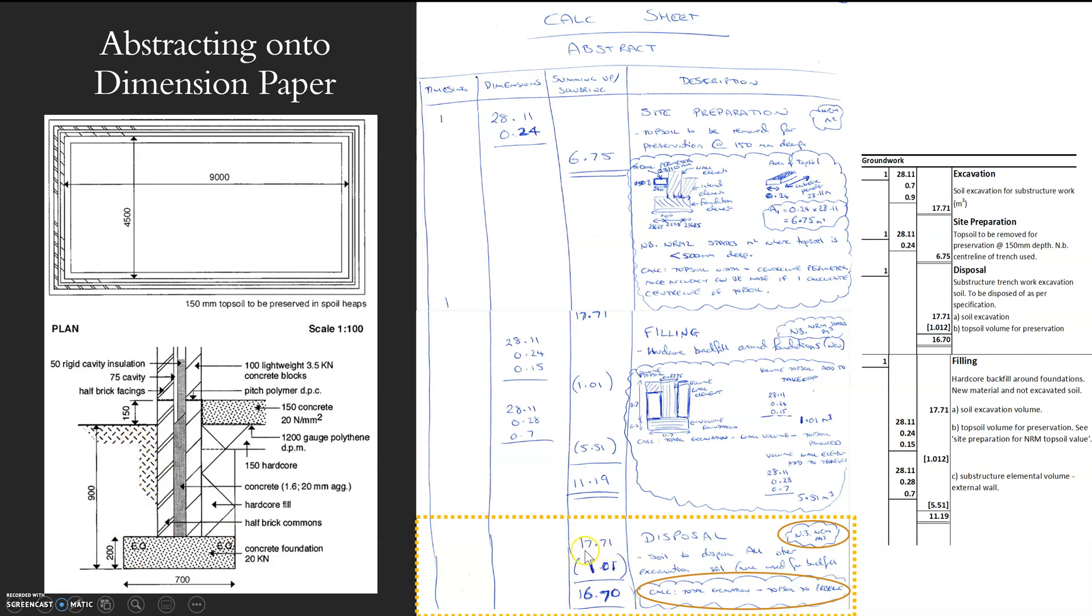So disposal is 17.71, which we worked out earlier. And we are actually taking away that beautiful section of topsoil that we're going to keep. So that leaves me with 16.7, which is what we're going to keep. Sorry, there's a picture. All in green, 17.71. All in red, taking away that.